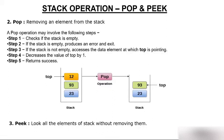Now let's talk about pop — removing an element. There are three elements: position 1 has 23, position 2 has 93, and position 3 has 12. Top is pointing to the third position. If you want to pop, you always pop the top element, so 12 will come out. Step one: check if the stack is empty. If you want to pop an element, always check if the stack is empty first.